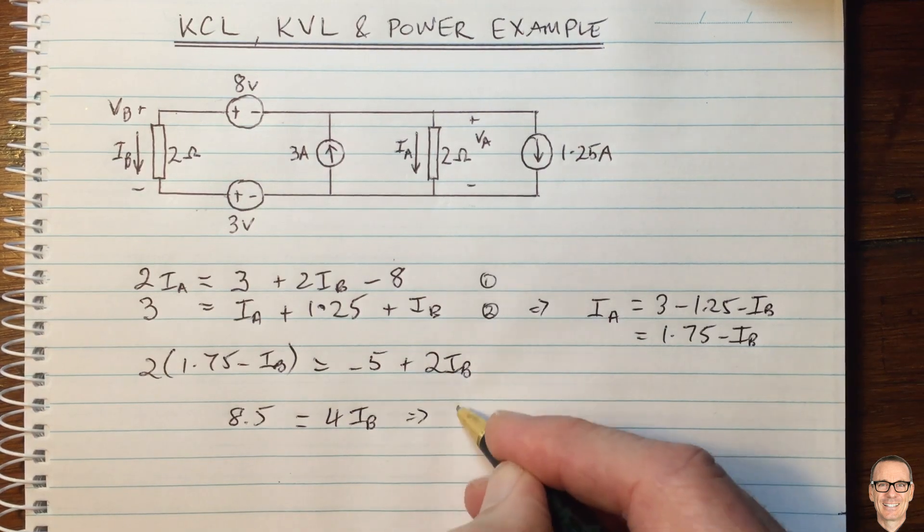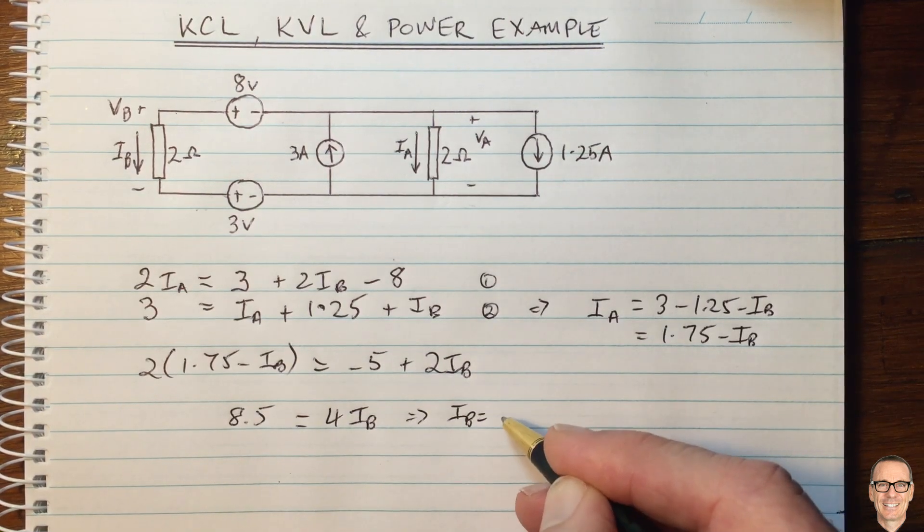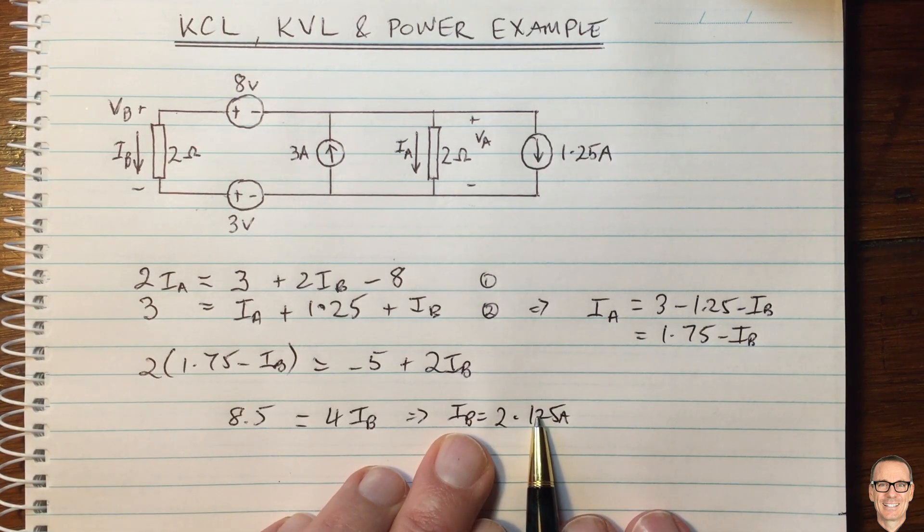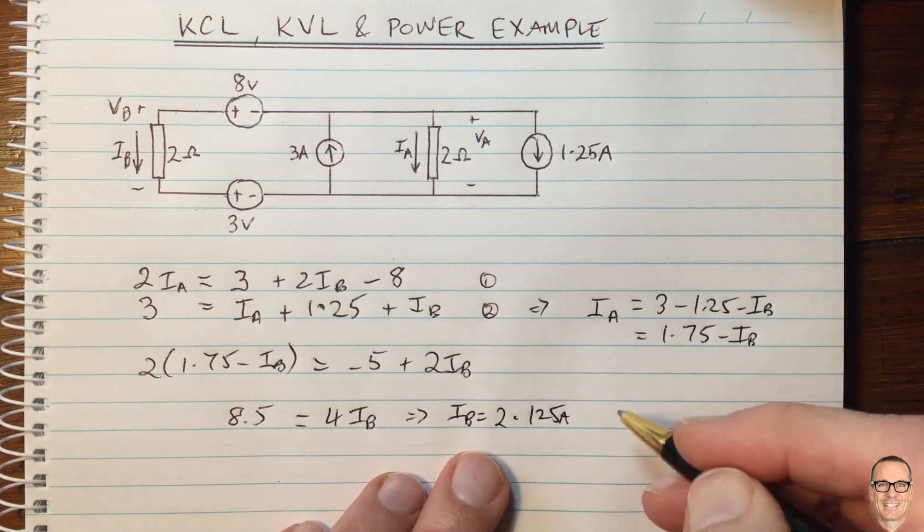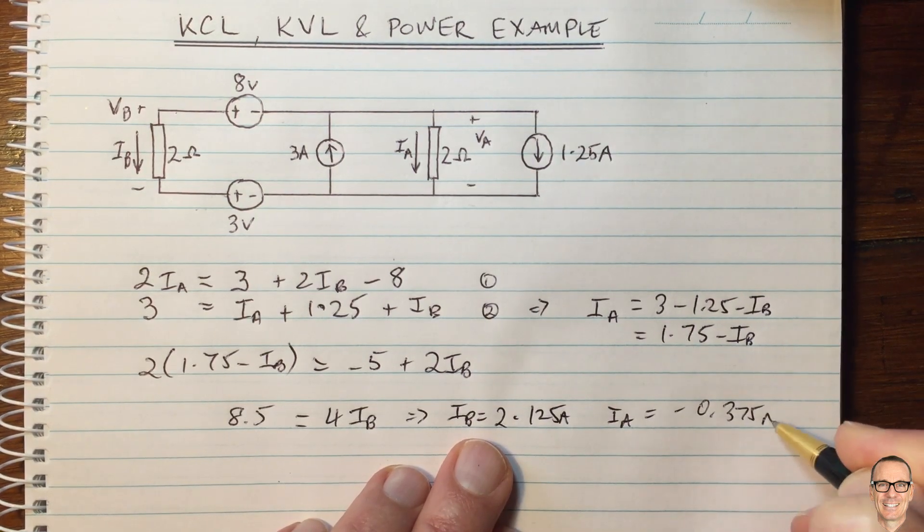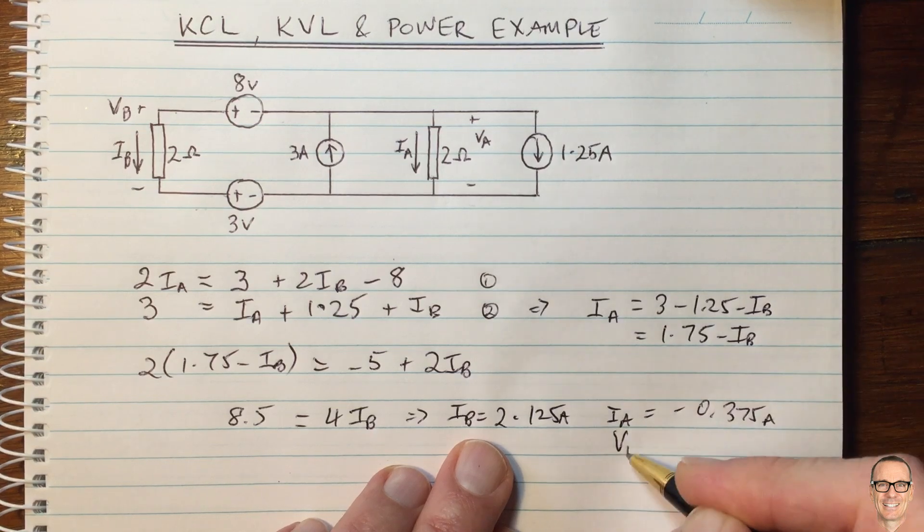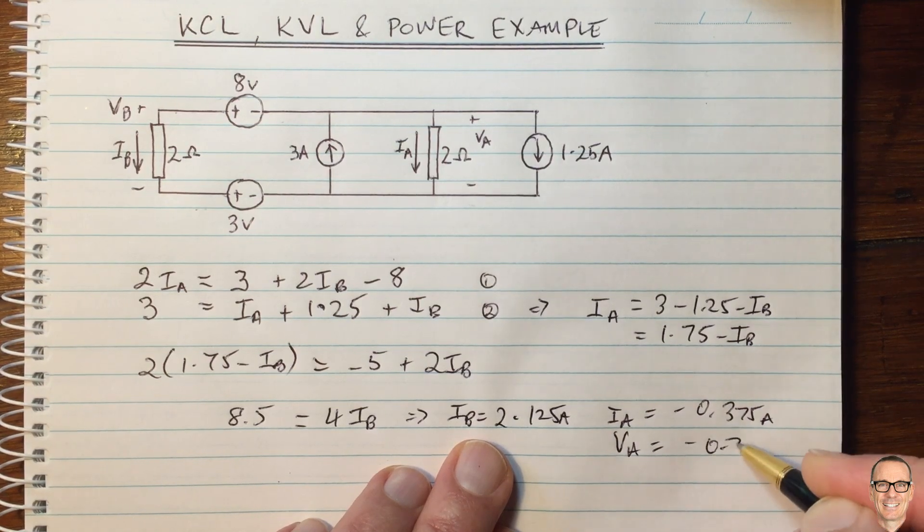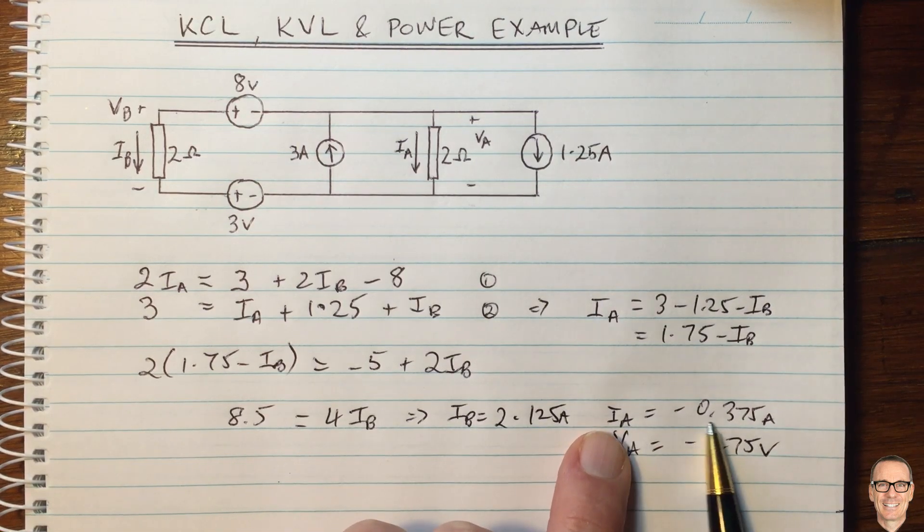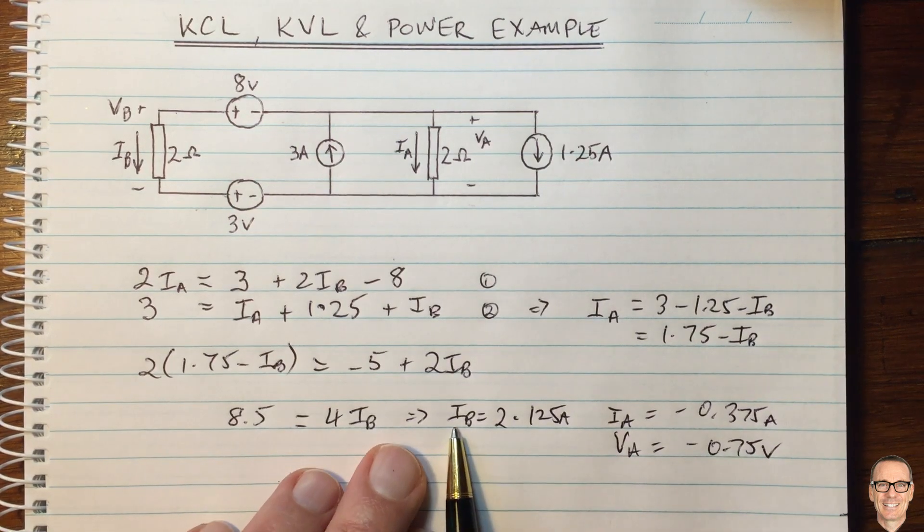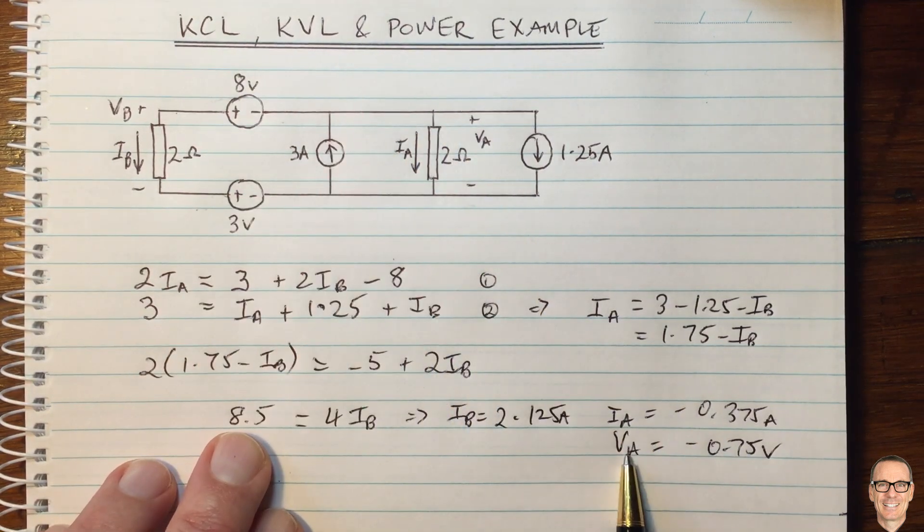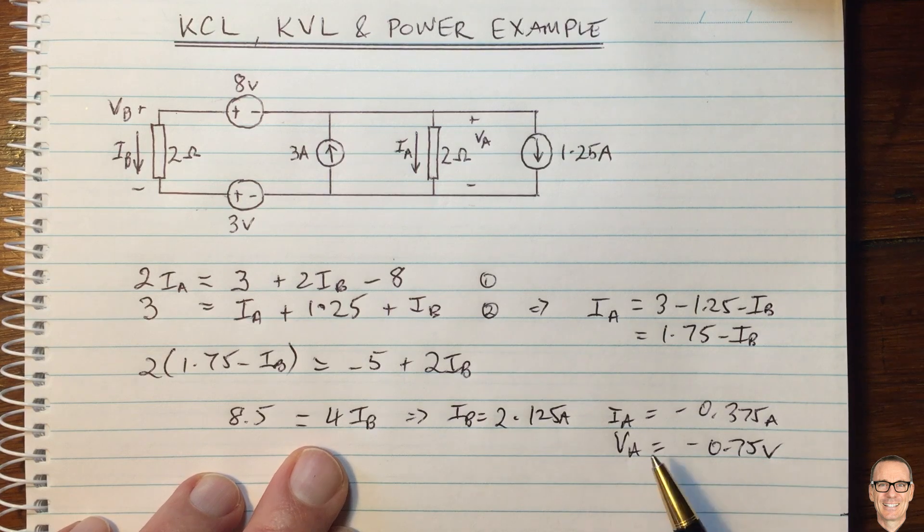So that implies that IB equals 2.125 amps. And then from that, we can find out that IA equals minus 0.375 amps. And VA equals minus 0.75 volts. Notice here that IA is negative. So we've worked out using a current law and a voltage law, the currents and the voltages.